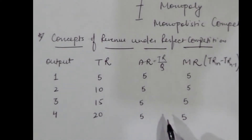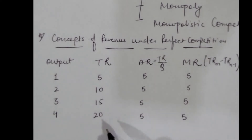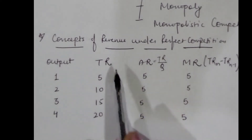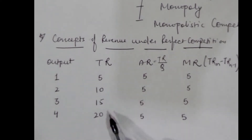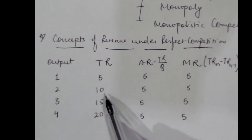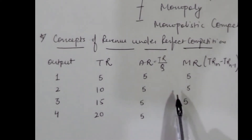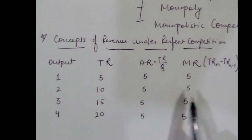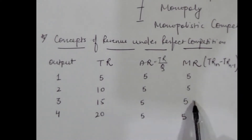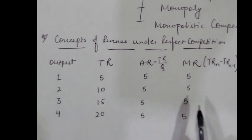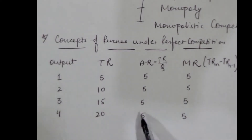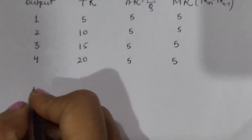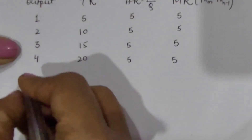We can conclude that total revenue is increasing at a constant rate, whereas average revenue and marginal revenue are both constant and equal to each other.